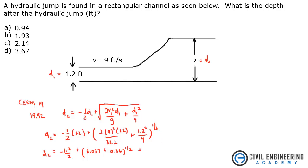All of that equals 1.93 feet — so that's d2. We're going from supercritical flow, losing energy in the transition, and it goes to subcritical. This is the fast flow before the jump, and this is the slow flow after. That is the answer; it looks like that's answer choice B.